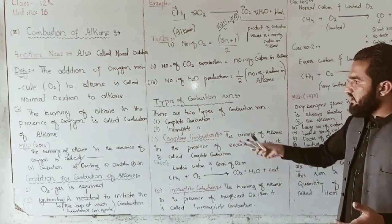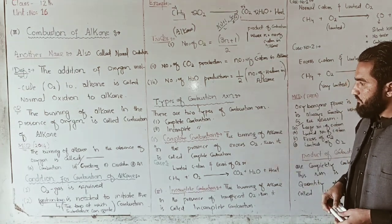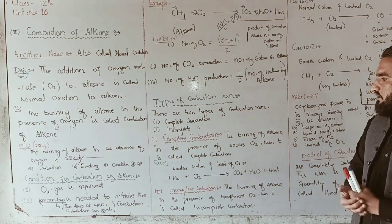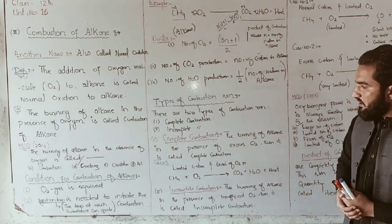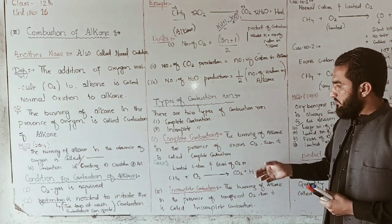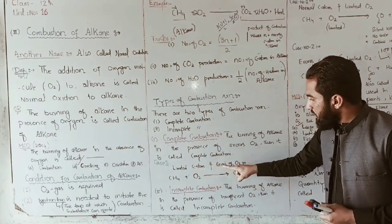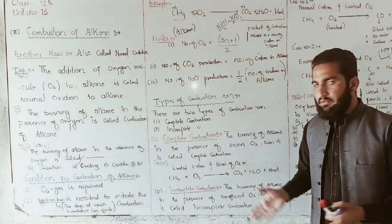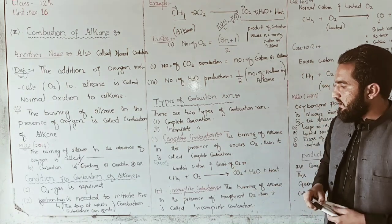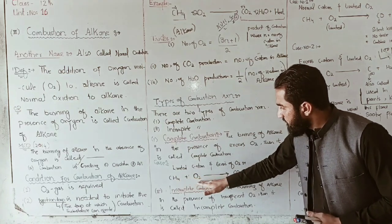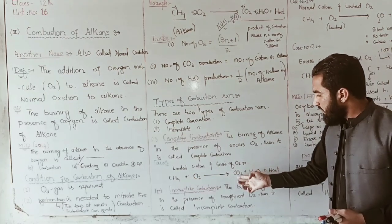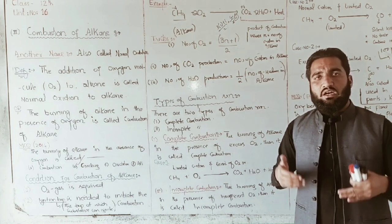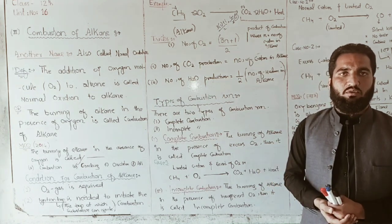There are two types of combustion conditions: complete combustion and incomplete combustion. In complete combustion, the burning of alkane occurs in the presence of excess oxygen. Case one: if the number of carbon atoms is limited and oxygen is in excess, like methane reacting with oxygen, the products are CO2 plus water plus heat.